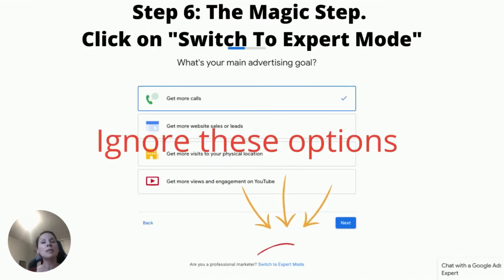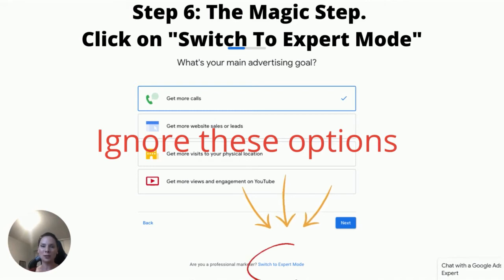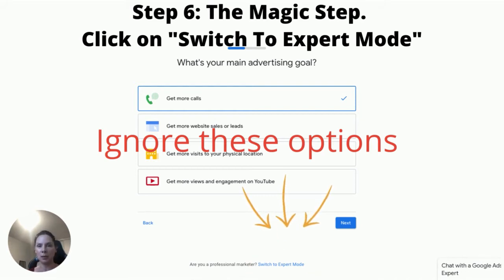And this is where the magic happens because I really want you to get this part right. I want you to ignore everything and all the options you see on this page except where I pointed the arrows — that's the only part I want you to look at — where it says Switch to Expert Mode. Go ahead and click where it says Switch to Expert Mode.